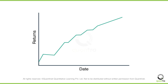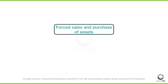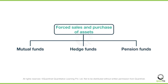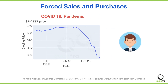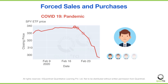Momentum is not only seen during scheduled announcements. There are other reasons which cause momentum. It can be due to forced sales and purchase of assets by mutual funds, hedge funds, and pension funds. During the COVID-19 pandemic, there was a stock market correction. A correction does not go well with investors, and there is an increase in redemption requests during these times. The redemption pressure is also due to the herding effect. To meet the redemption request, the fund house is forced to sell in an already falling market. This causes momentum.